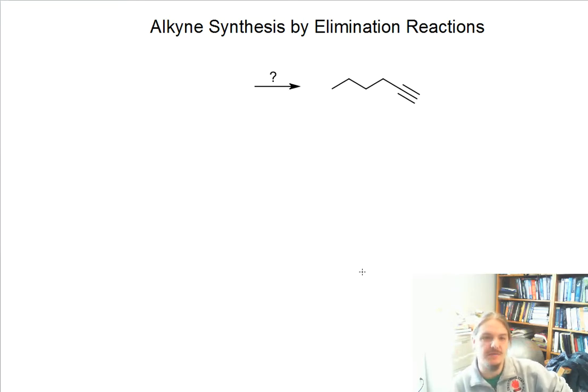In our last video, we talked about ways to synthesize alkynes from other alkynes, particularly by alkylating terminal alkynes. In this video, we're going to talk about another way to synthesize alkynes, and this way is particularly valuable if you don't already have an alkyne molecule laying around. So what happens if we wanted to synthesize this compound here, which is 1-hexyne, but we don't have an alkyne laying around?